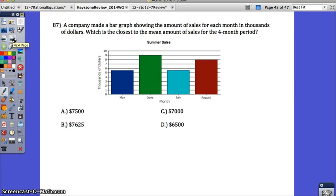Problem number 87. A company made a bar graph showing the amount of sales for each month in thousands of dollars, which is the closest to the mean amount of sales for the four-month period. Remember that mean is average. So what is the average number of sales for all four months? To find the average, you need to add up all the data values and divide by however many there are. So I have four months. I'll be dividing by four. You just need to find the sales for each month.